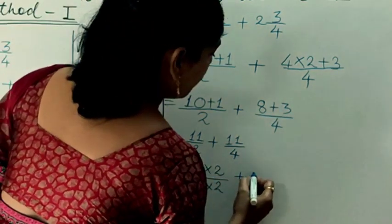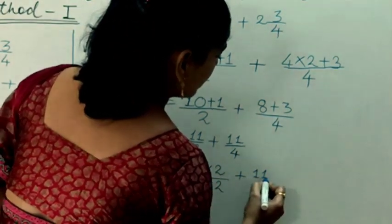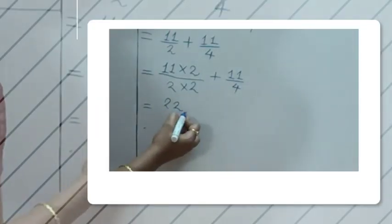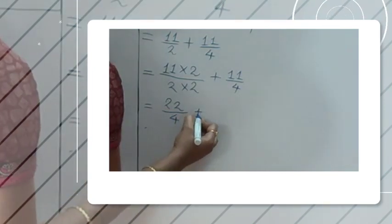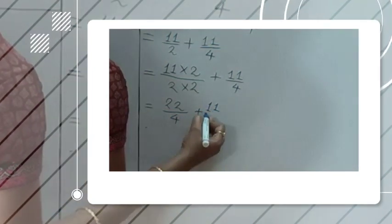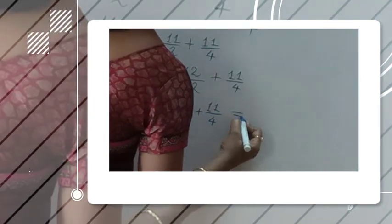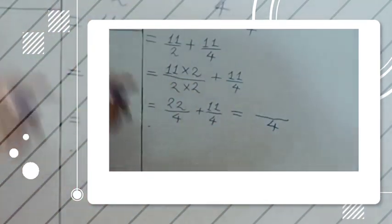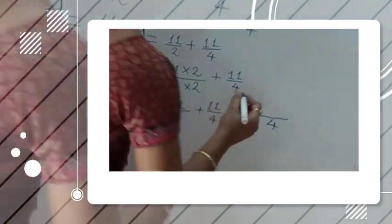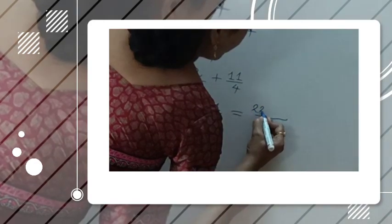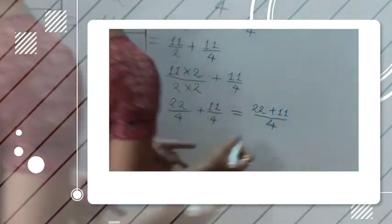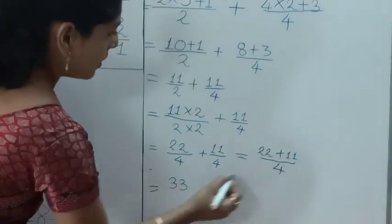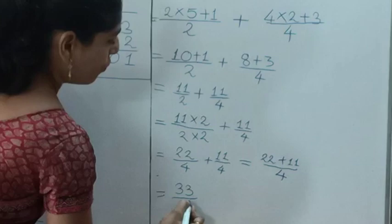So 11 upon 4 stays as it is, and 11 upon 2 becomes 22 upon 4. Denominator stays as 4 — we are not adding denominators. Then 22 plus 11 equals 33 upon 4.